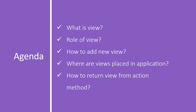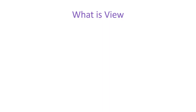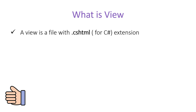We will also learn how to return a view from an action method. First, let's start with what a view is. A view is a file with a .cshtml extension. I'm using C# as my programming language, which is why I'm using .cshtml. The extension of that file is cshtml and that file is called a view.